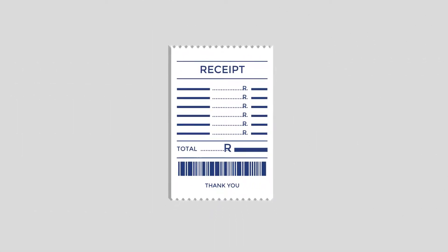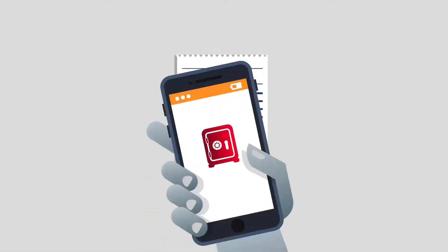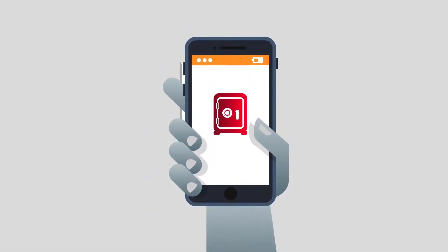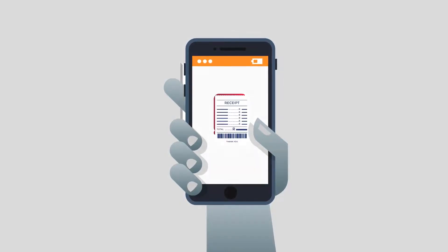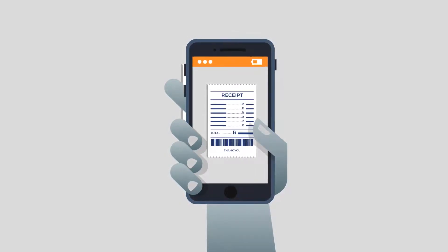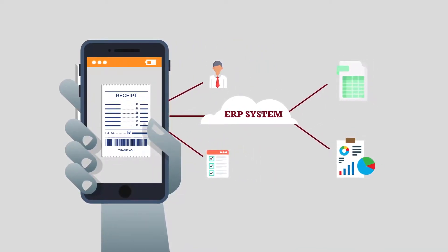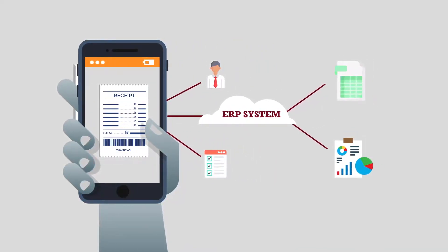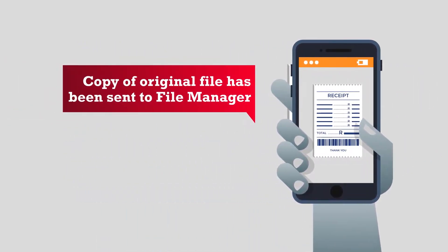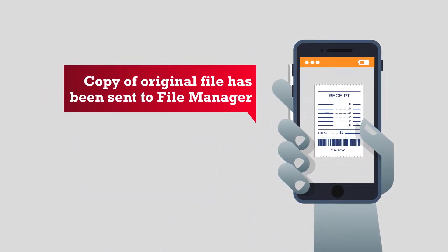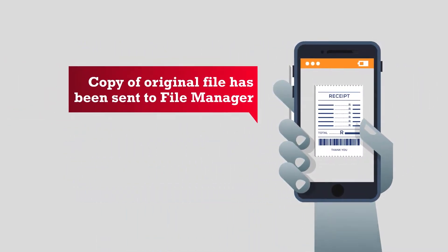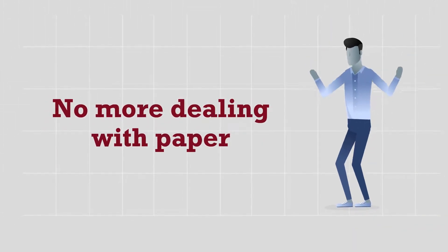OfficeVault's automated receipt data capture engine can solve these problems. OfficeVault reads your receipt and automatically extracts the information you need. Using our workflows, expenses can be easily sorted and submitted automatically. It captures the data and sends it to a predefined workflow, or into your ERP system in seconds, turning into a spreadsheet, report, or whatever you want. Plus, it also sends a copy of the original document to our file manager. So, no more dealing with paper.